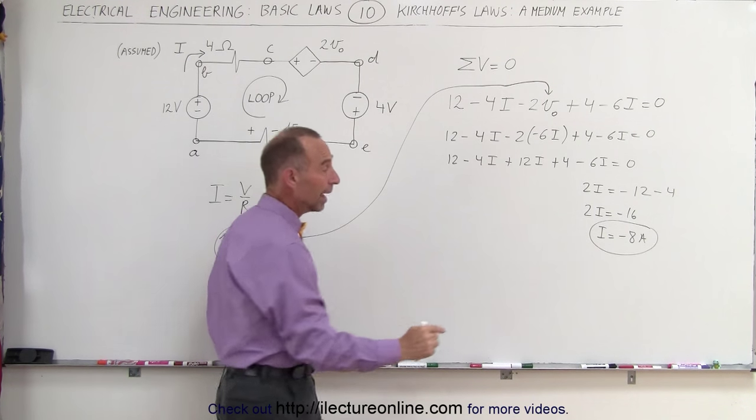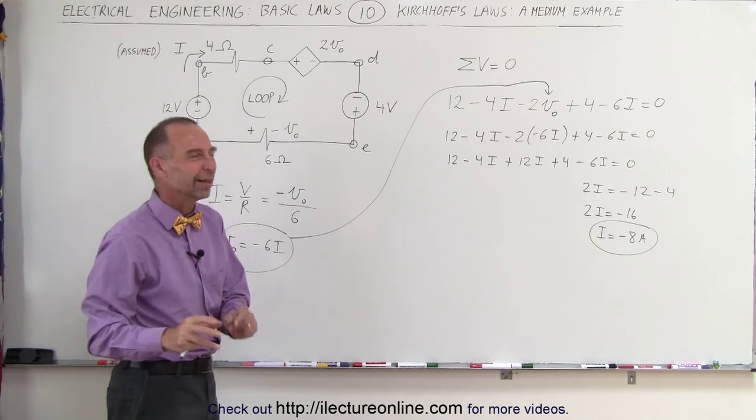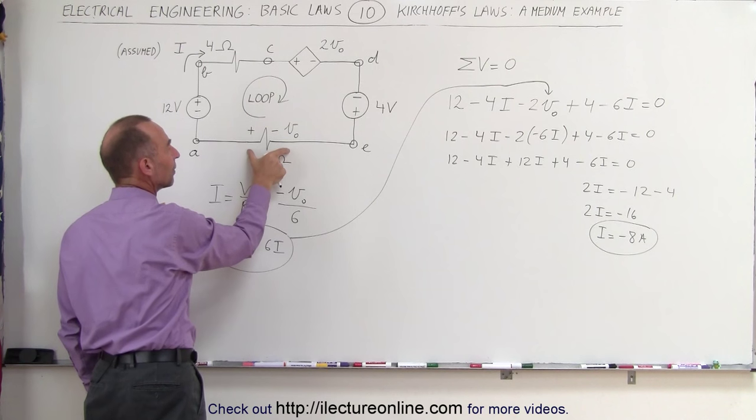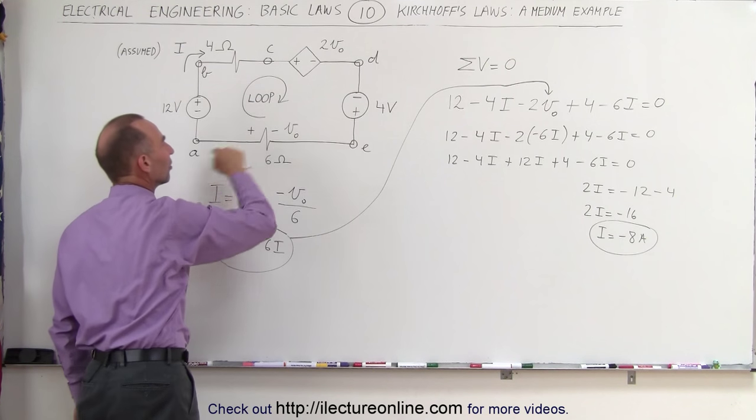Now we know the current in the circuit, and notice the sign, a negative 8 amps. We assumed that, that would be the case, that we would have a real current in the opposite direction, because of the voltage drop that was in opposition to what we assumed, when we had the current going in this direction.